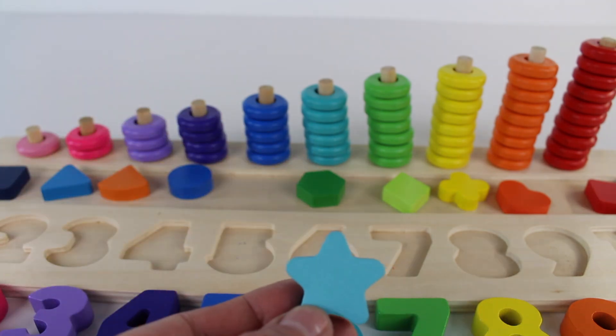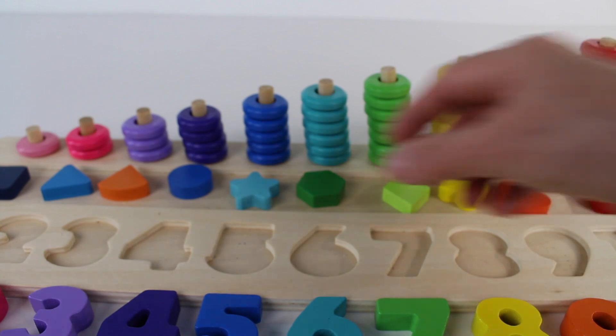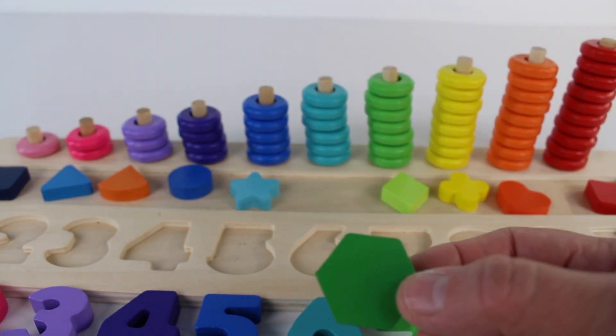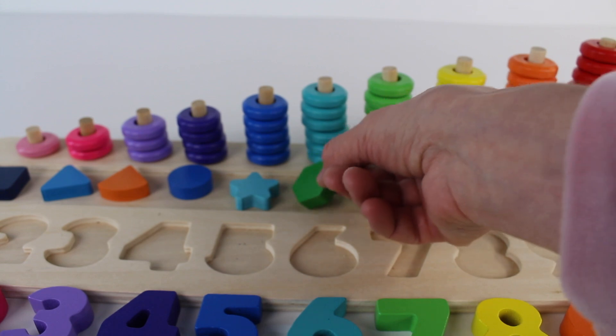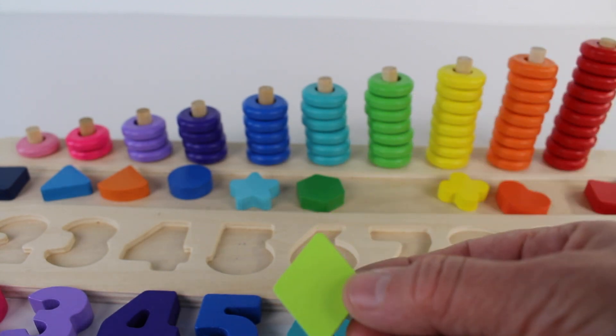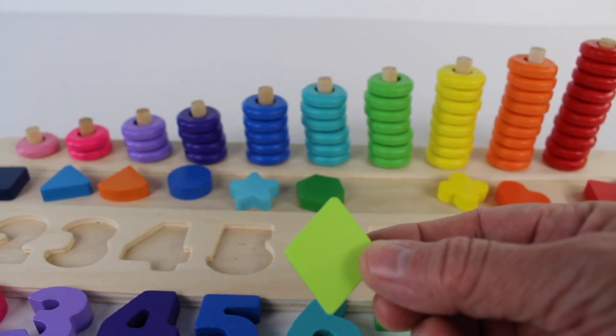A star has five points. A hexagon has six sides. A rhombus looks like a diamond.